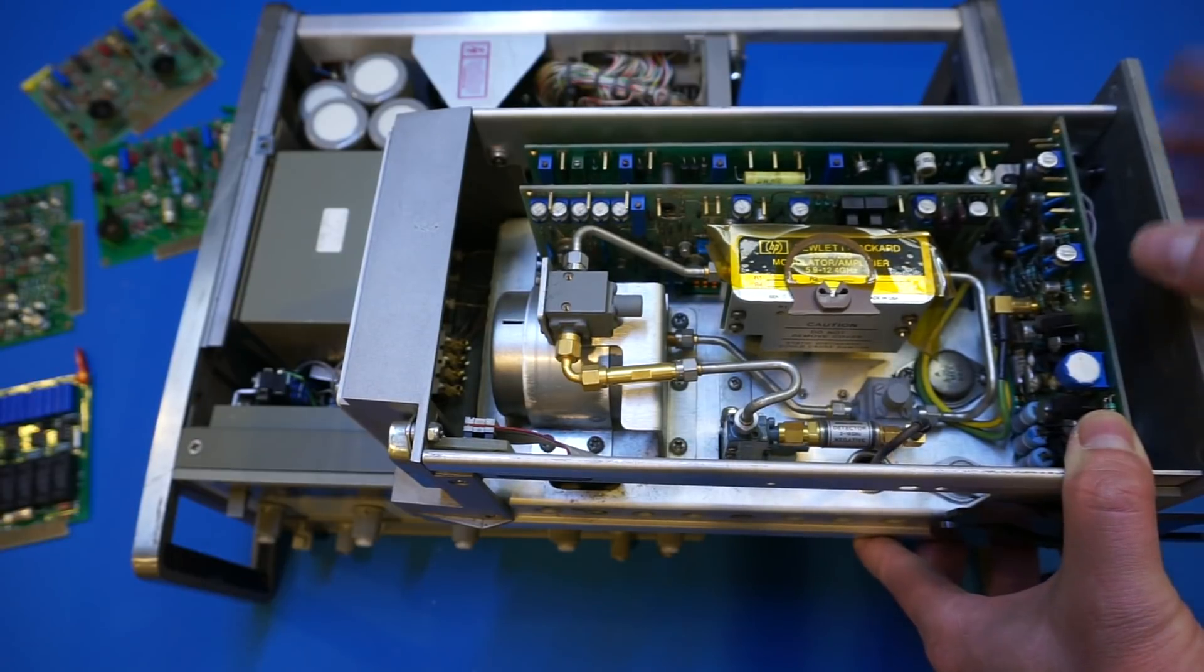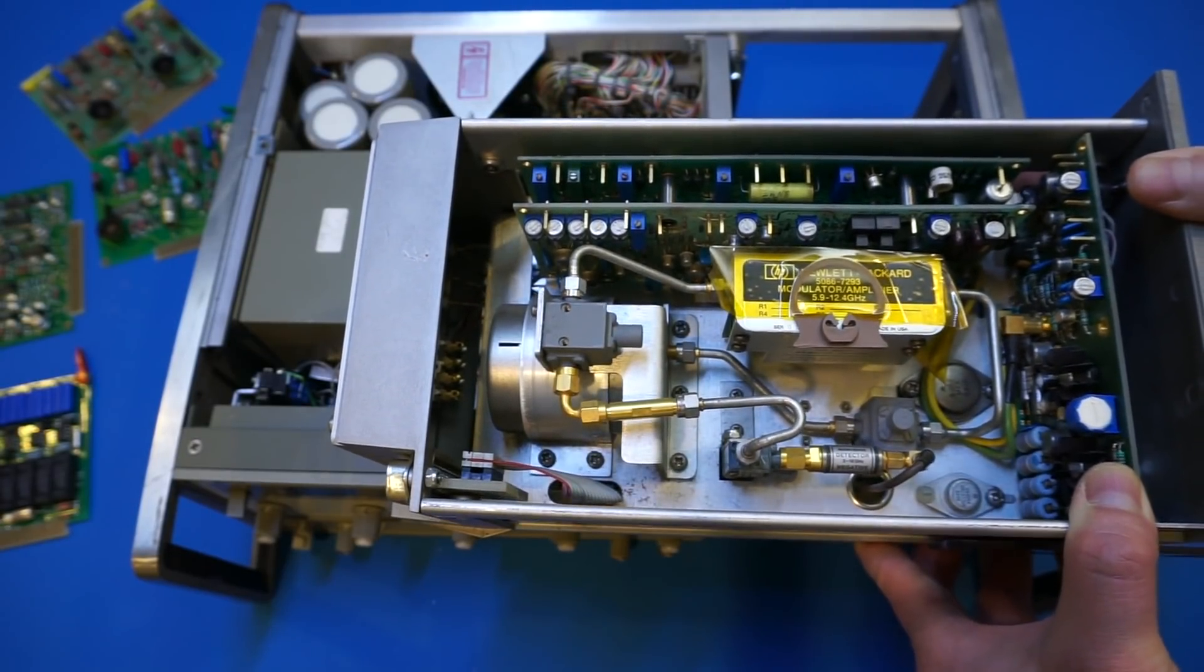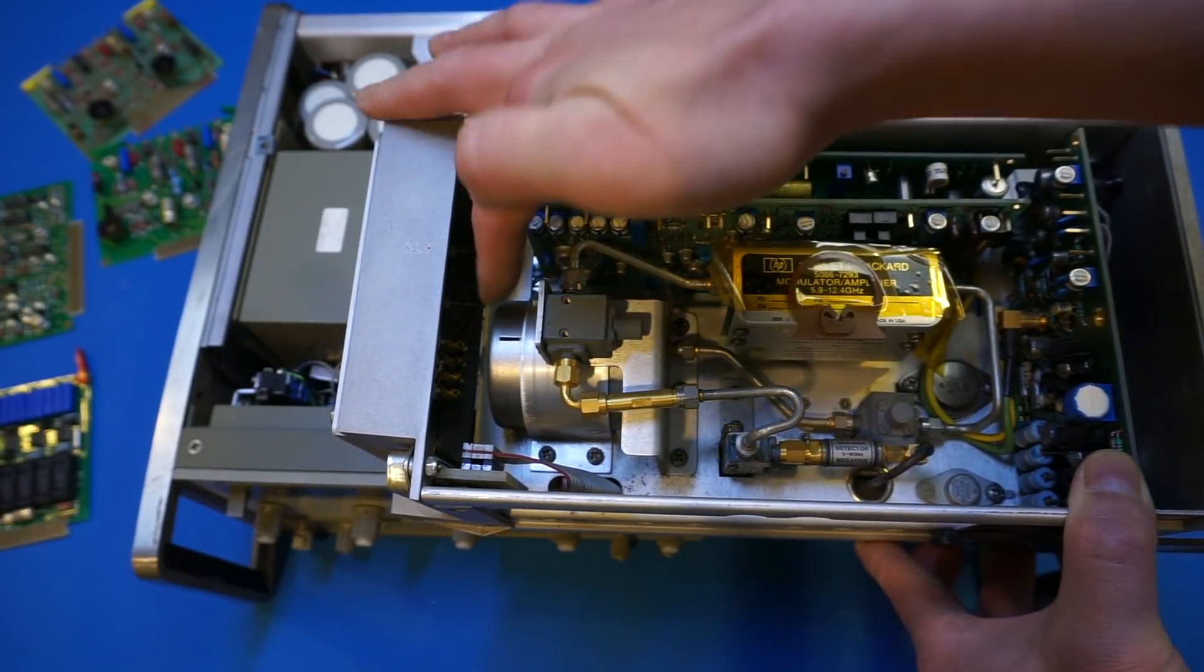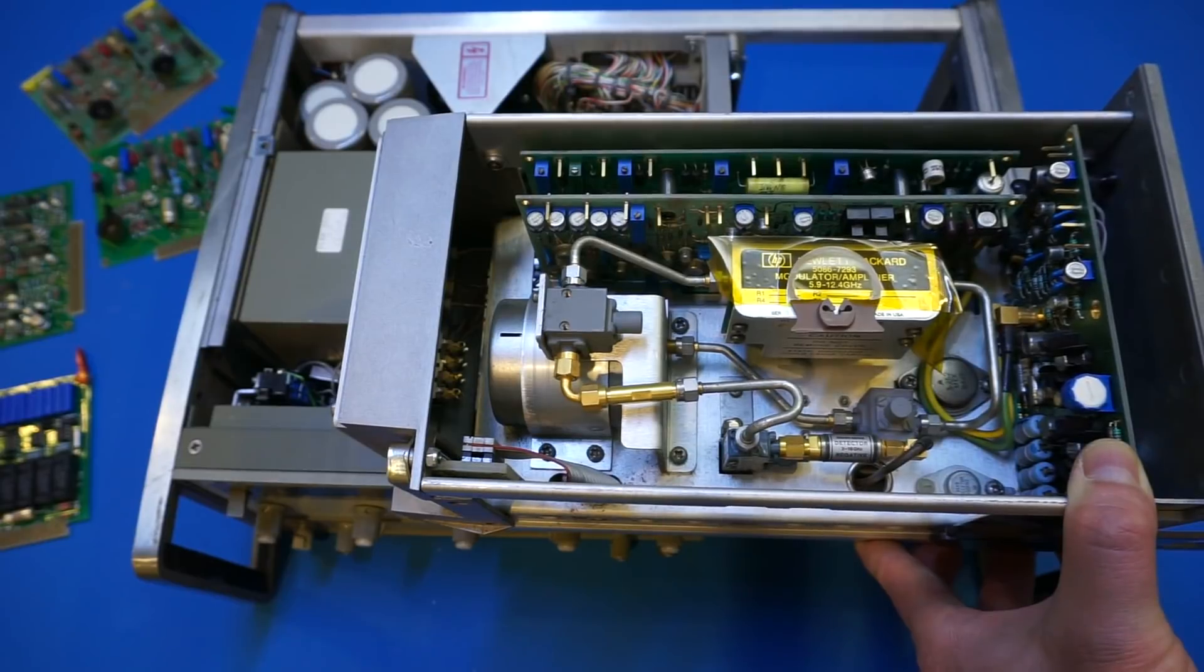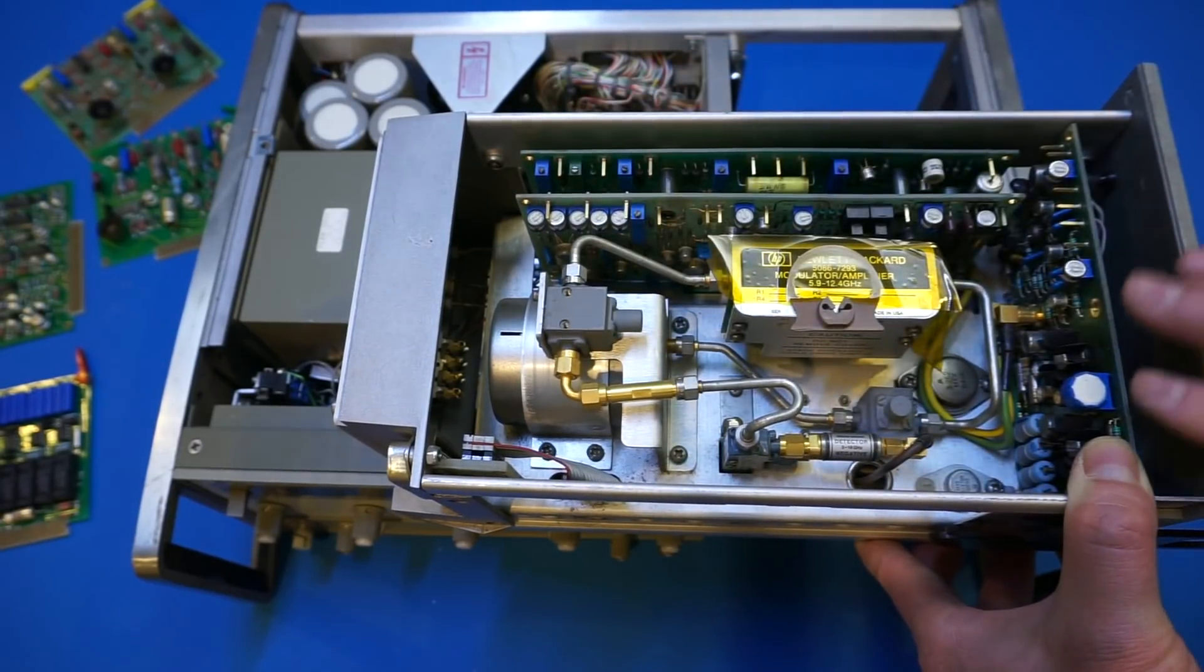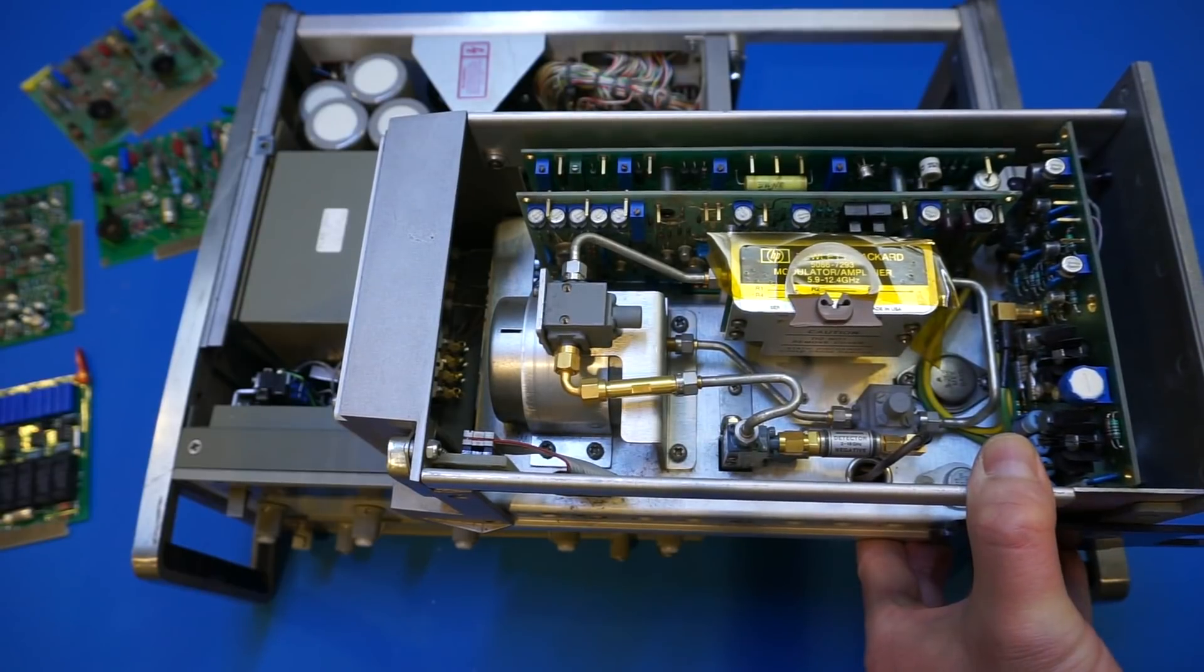So let's take a closer look at this YIG oscillator unit. And the main filter is the drum unit down there.